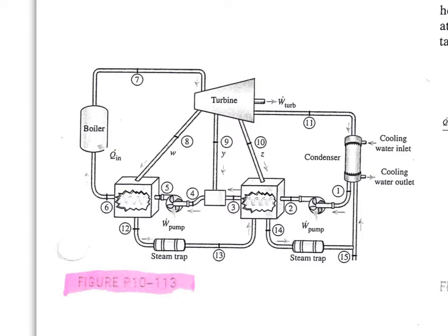I'll show you how all that process works so you can see all the state numbers. I'm not going to show the diagram again — you can access it via a link I'll provide in the description — so you can look at it while you watch me process and create the TS diagram, and see how everything works together. The only information I need that I can't get from just knowing it's an ideal Rankine cycle is the last working fluid point where it leaves the turbine.